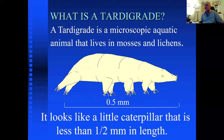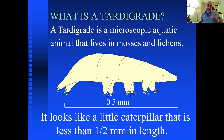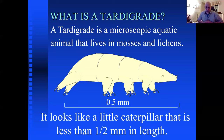So what is a tardigrade? It's a microscopic animal, and it's aquatic — meaning it really needs water. The tardigrade lives and thrives in water. It might crawl out on the surface of a leaf or some moss, but it needs to be wet at all times. If it dries out, that's called desiccation, and it goes into what we call cryptobiosis to protect itself.